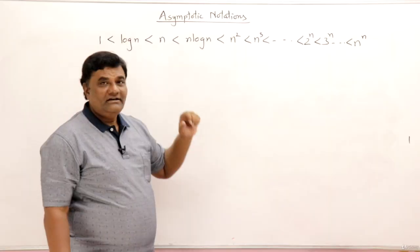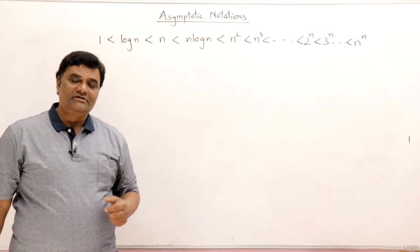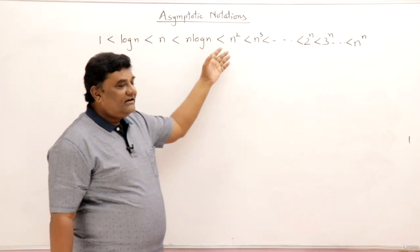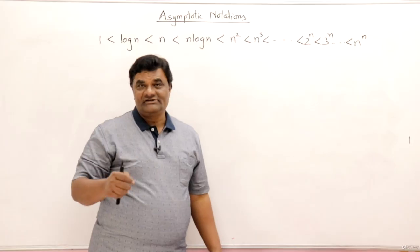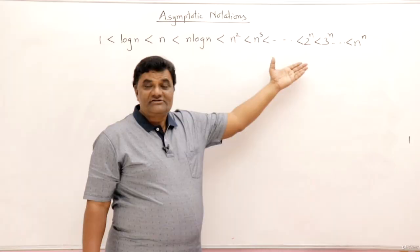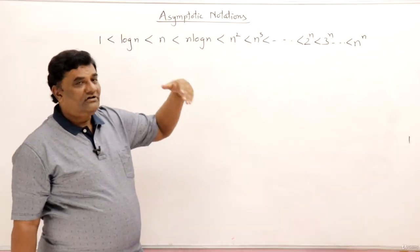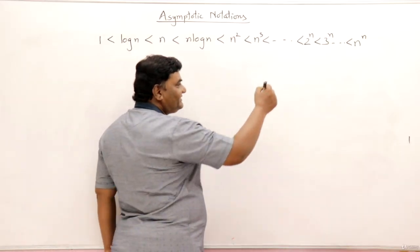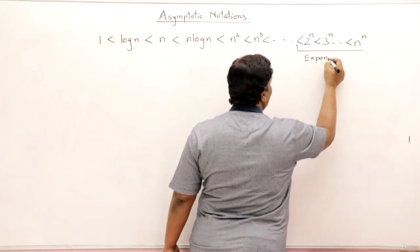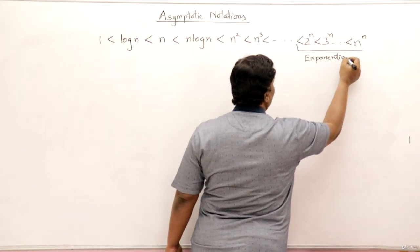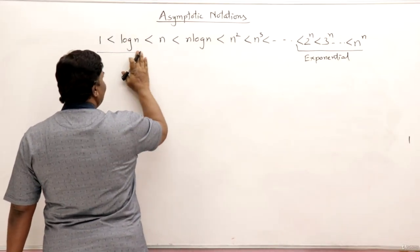Then n log n — this was merge sort or quick sort best case. n² appeared in matrix operations and graphs where time depended on the matrix. Then 2^n and up to n^n — these are called exponential time complexities, while the earlier ones like n, n log n, n² are called polynomial time complexities.